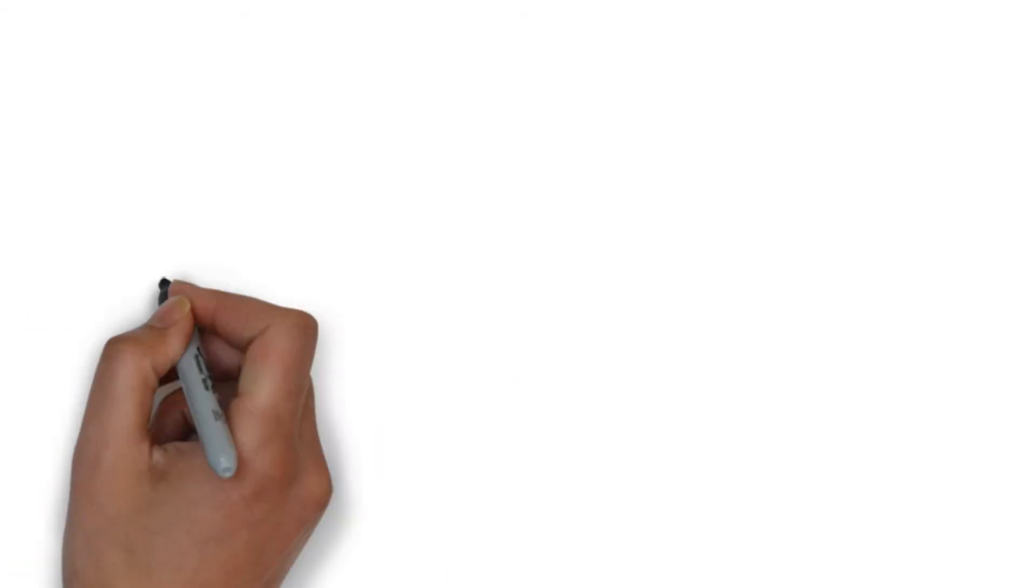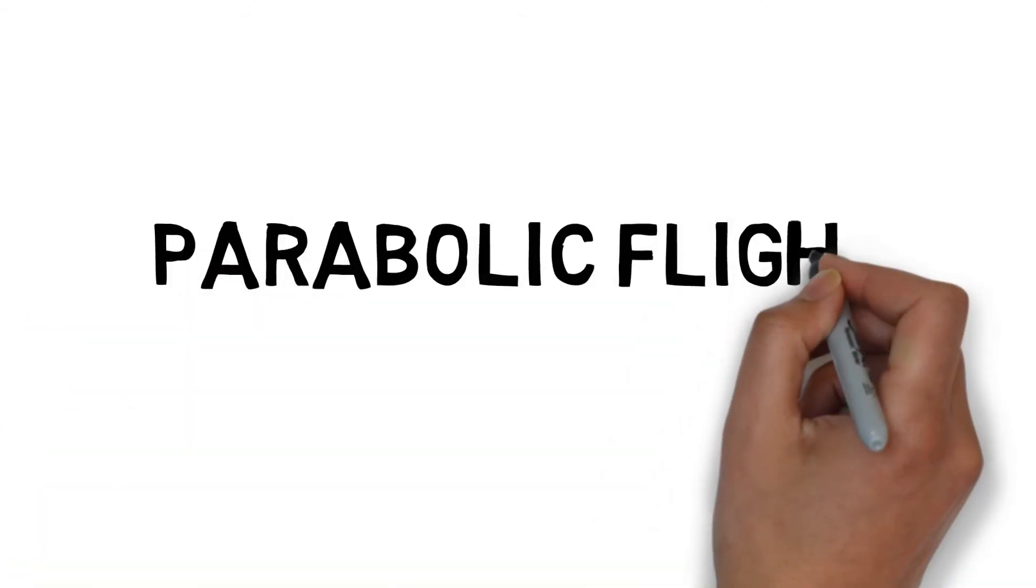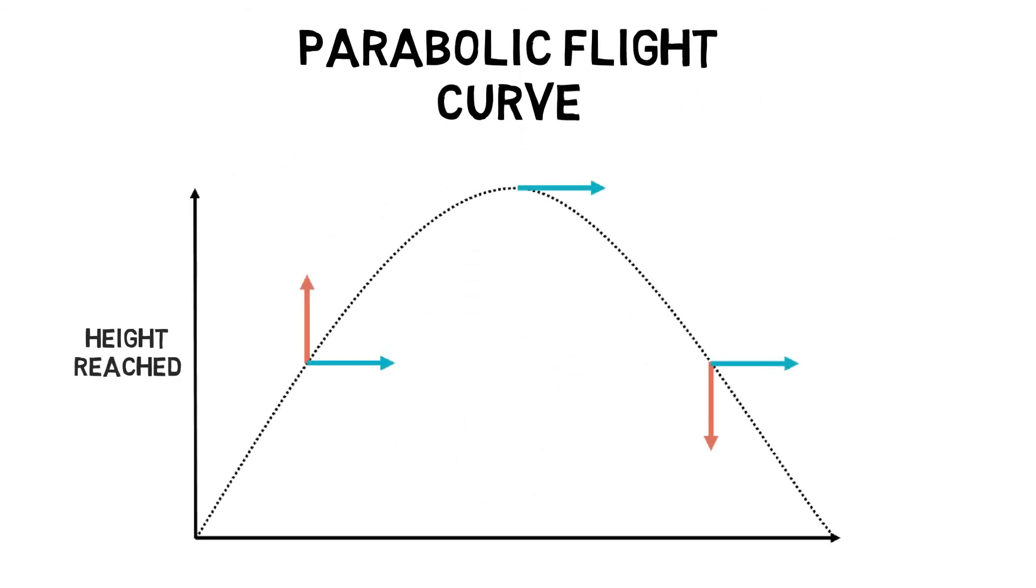A parabolic curve represents a symmetrical flight path. Near the start of the flight, there is a large upwards vertical component, but a fixed horizontal component.